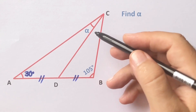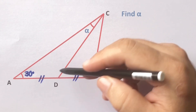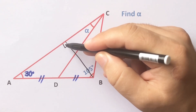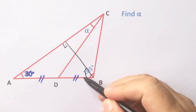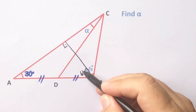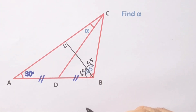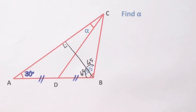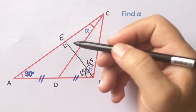First step: if we draw a perpendicular opposite the 30 degrees like this, here must be 60 degrees and 45 degrees left here. Then let's call this point E.